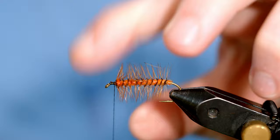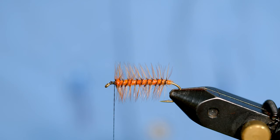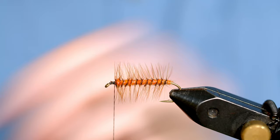Now tie a thread base where we're going to tie on the elk. Take some cow elk, clean it, cut it off and then clean it. I like to use a little comb and clean out the under fur.